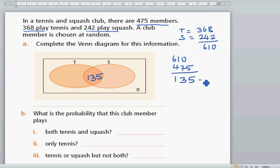Okay, so this is T plus S. The people who play only tennis is going to be 368 minus 135, which is 233. I worked this out, you can do the simple math yourself.